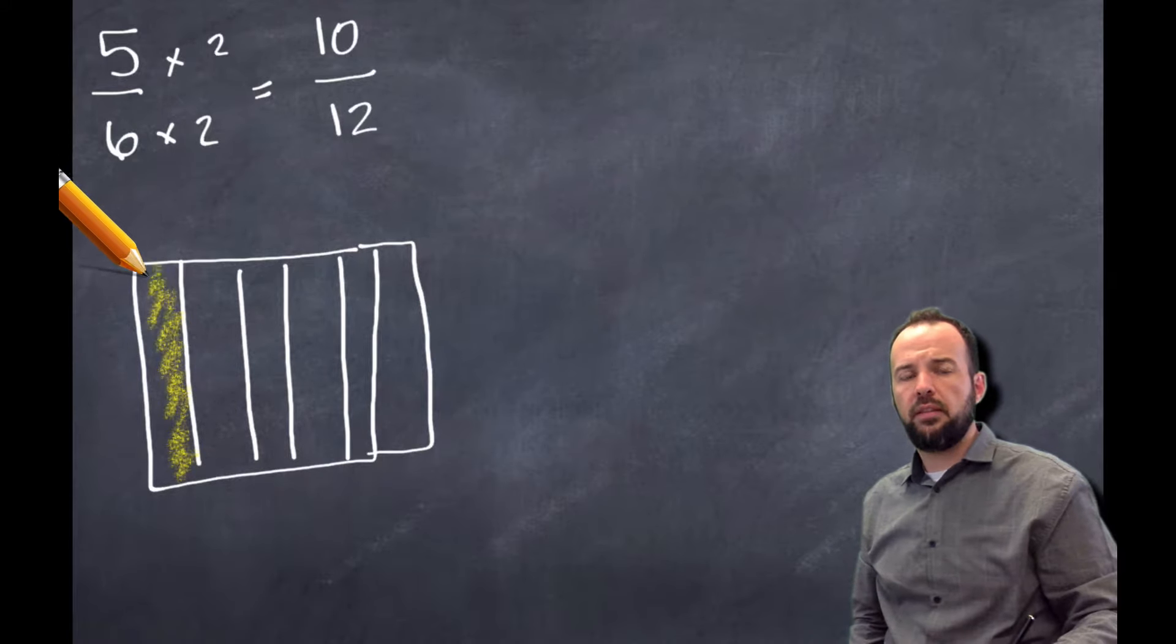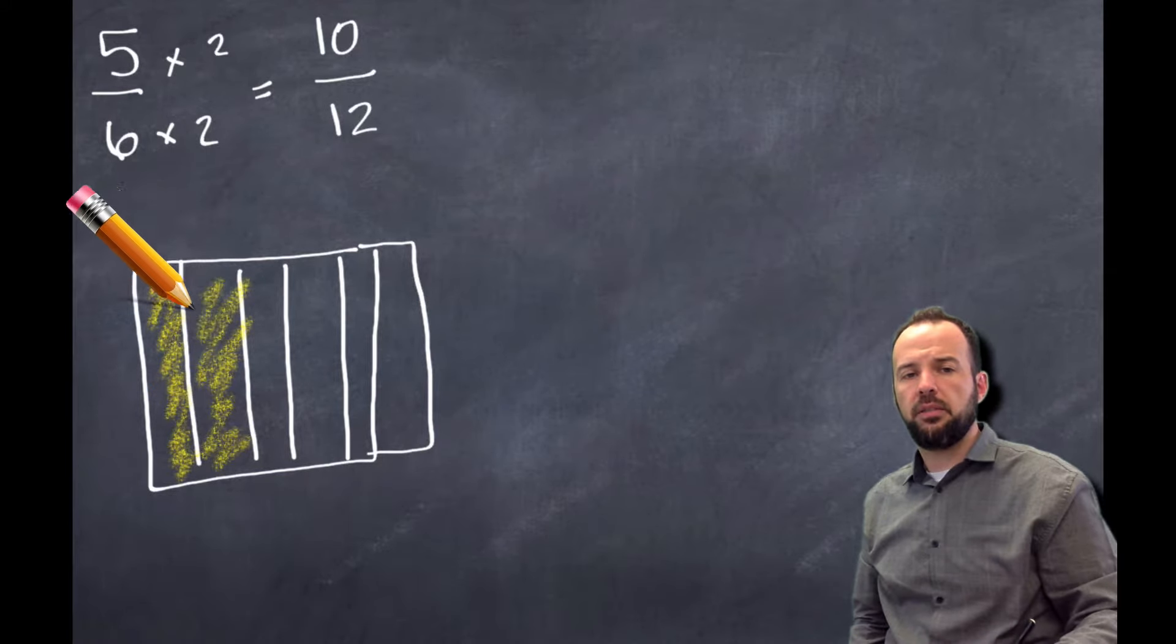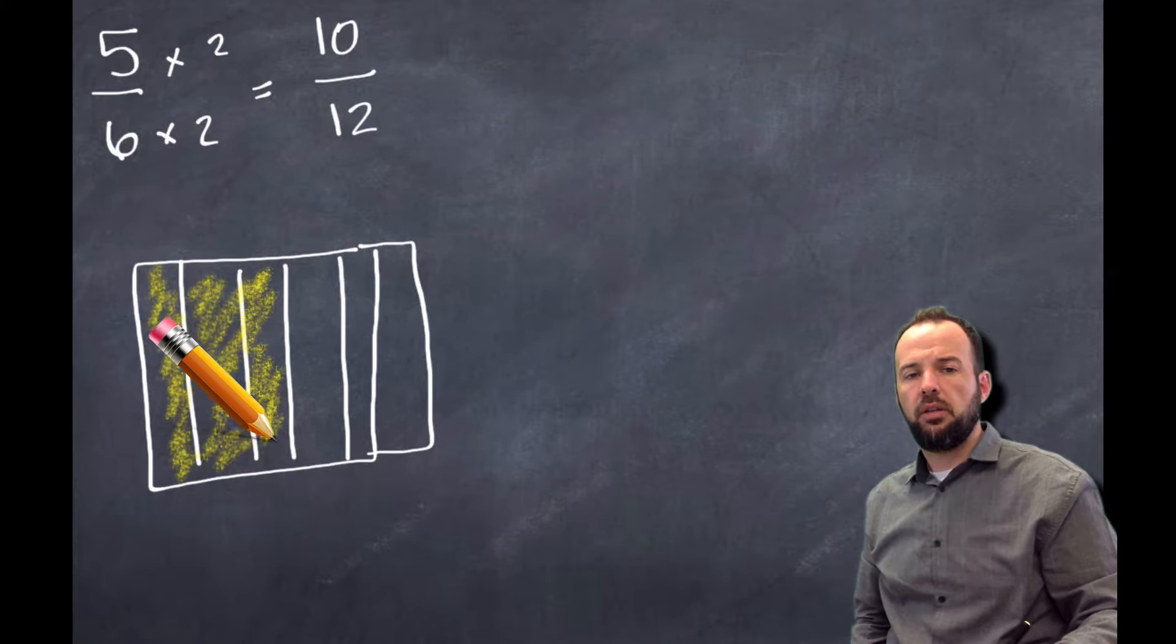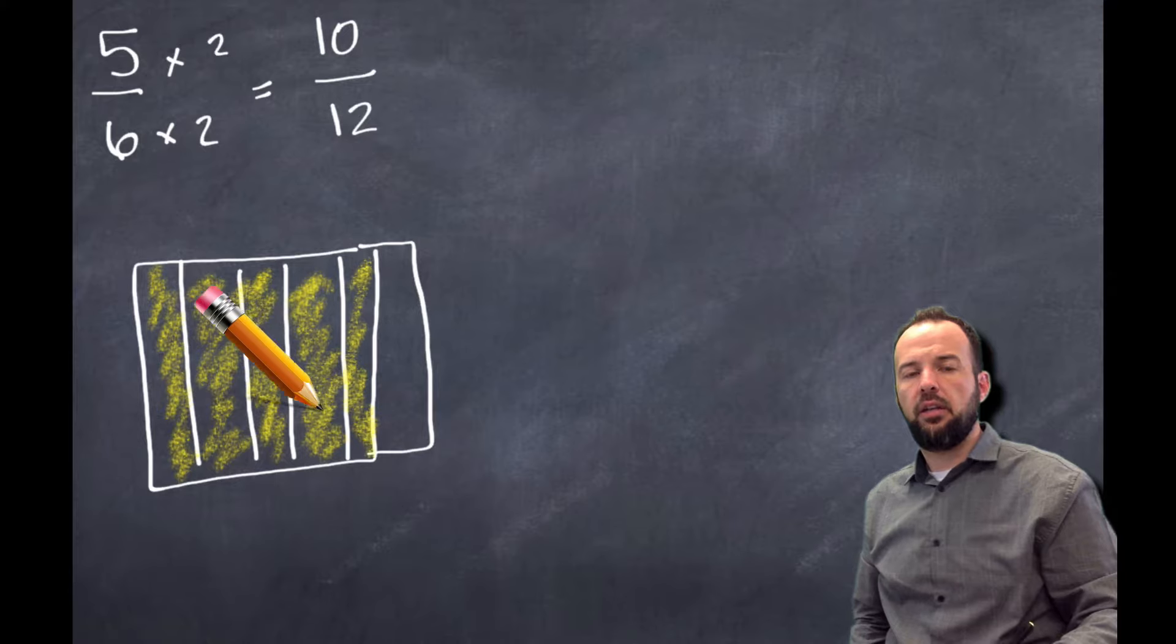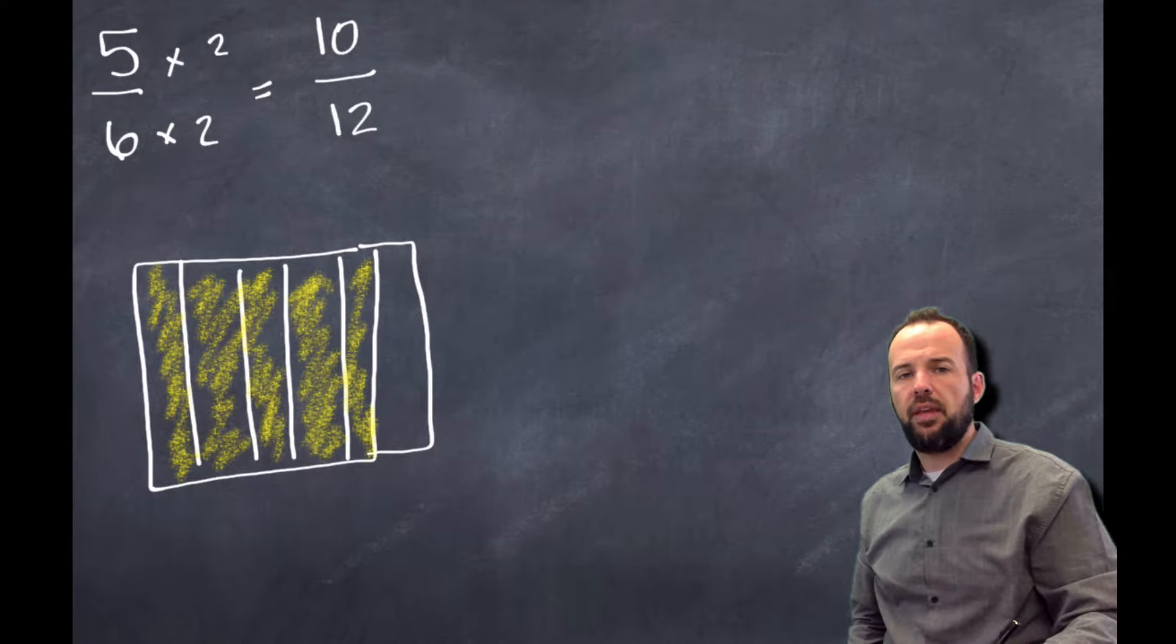So I'm going to go ahead, I divided this whole into six pieces, I'm going to color in five of them: one, two, three, four, and five. So I have 5/6, and then...